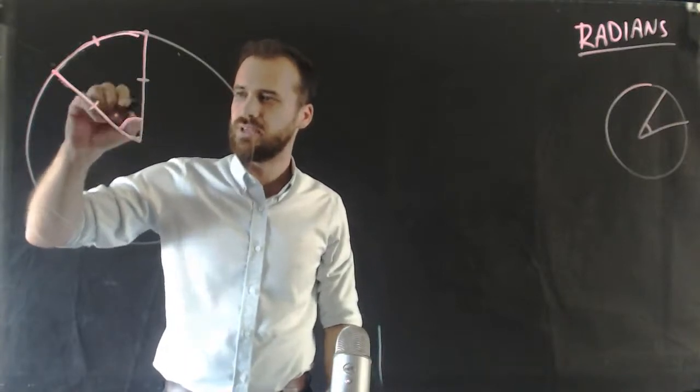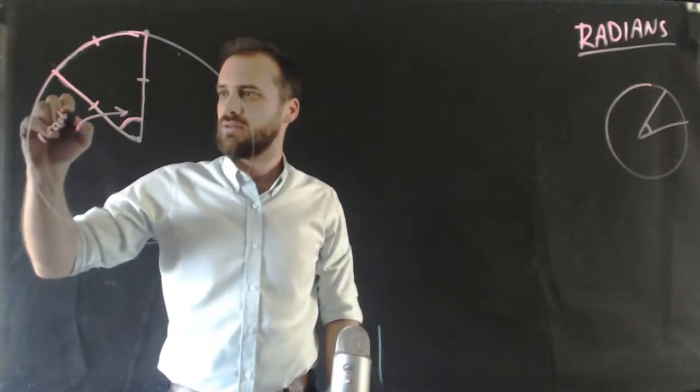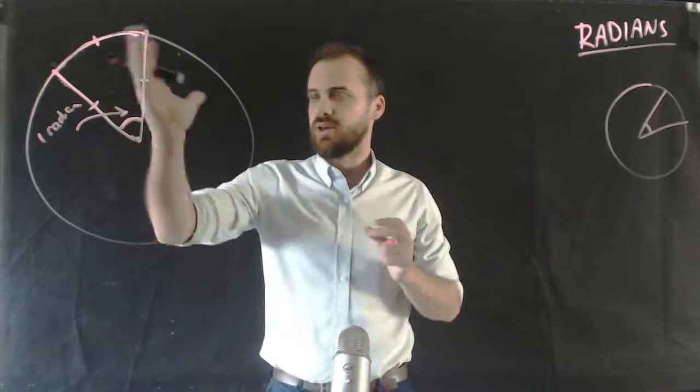One radian is going to be there. Now if I keep working around the circle,